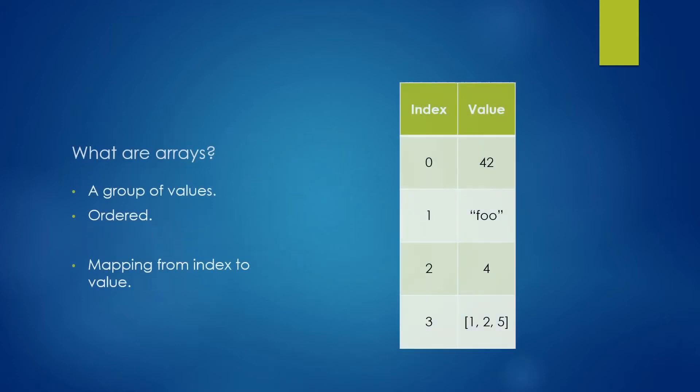So first of all, let's have a look at what are arrays. Well, in a way, they're a group of values and they are ordered. So on the right, you can see an example of what an array may be represented as. You have a table and on the left you have indices and on the right you have values.